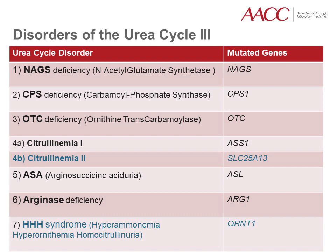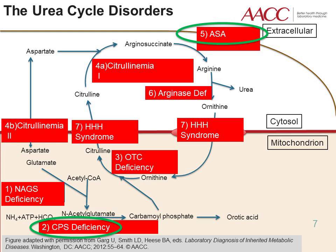This slide lists the individual urea cycle disorders. The ones in black are enzymatic deficiencies and are considered the core urea cycle disorders, and the ones in blue are amino acid transporter defects. The affected genes are shown next to each deficiency in italics. For example, the disorder where the enzyme carbamoyl phosphate synthase is affected will be referred to as CPS and is caused by mutations in the CPS1 gene. Similarly, OTC is the deficiency in the ornithine transcarbamylase enzyme due to mutations in the OTC gene. The other disorders are NAGS, citrullinemias 1 and 2, ASA, arginase deficiency, and HHH syndrome.